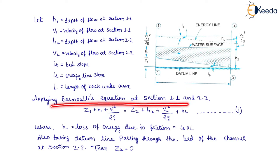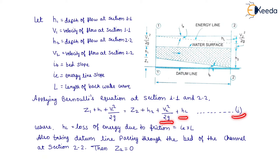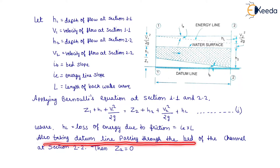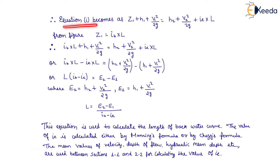Applying Bernoulli's equation at sections 1-1 and 2-2: Z1 + H1 + V1²/2g = Z2 + H2 + V2²/2g + HL, which is our first equation. Where HL is the loss of energy due to friction, which equals IE × L. Taking the datum line passing through the bed of the channel at section 2-2, then Z2 equals 0. Therefore equation 1 becomes: Z1 + H1 + V1²/2g = H2 + V2²/2g + IE × L.